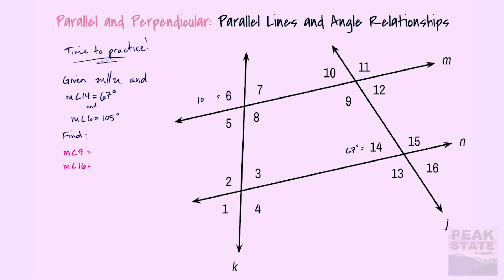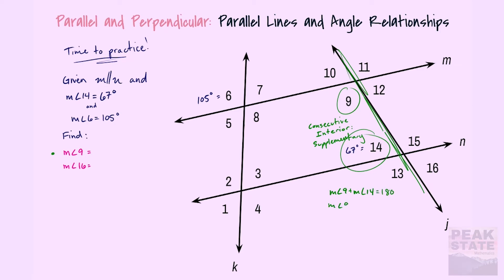To find angle nine, transversal j ties those together and they are consecutive interior angles, which are supplementary. So the equation is: the measurement of angle nine plus the measurement of angle fourteen equals 180 degrees. Substituting in 67 for angle fourteen and subtracting, we get that the measurement of angle nine is 113 degrees.